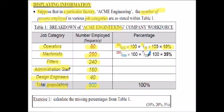If we look at machinists, there are 280 machinists working at the company. So 280 divided by the population of 800, again times 100, factors down to 7 upon 20 times by 100 gives us 35%. 35% of the people at the company are machinists. I will let you fill in the remaining tables for fitters, administration staff and design engineers. The answers are shown below.